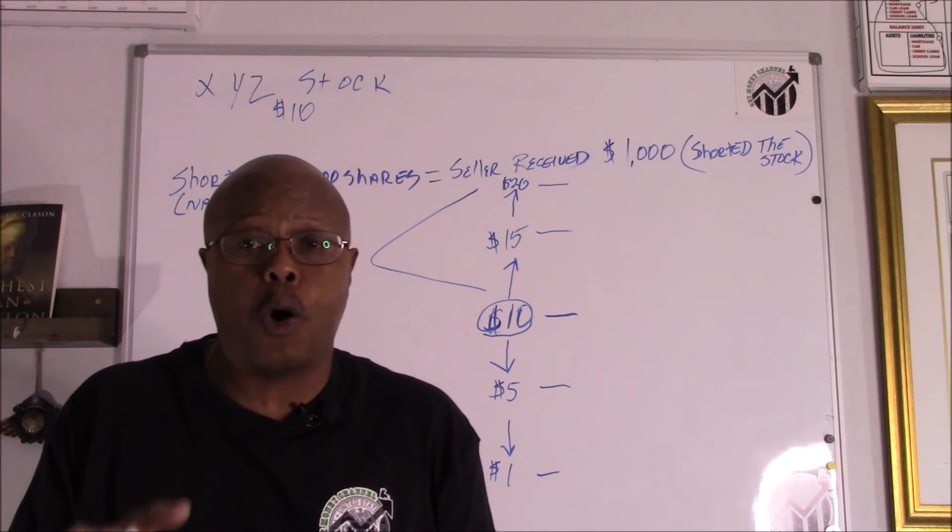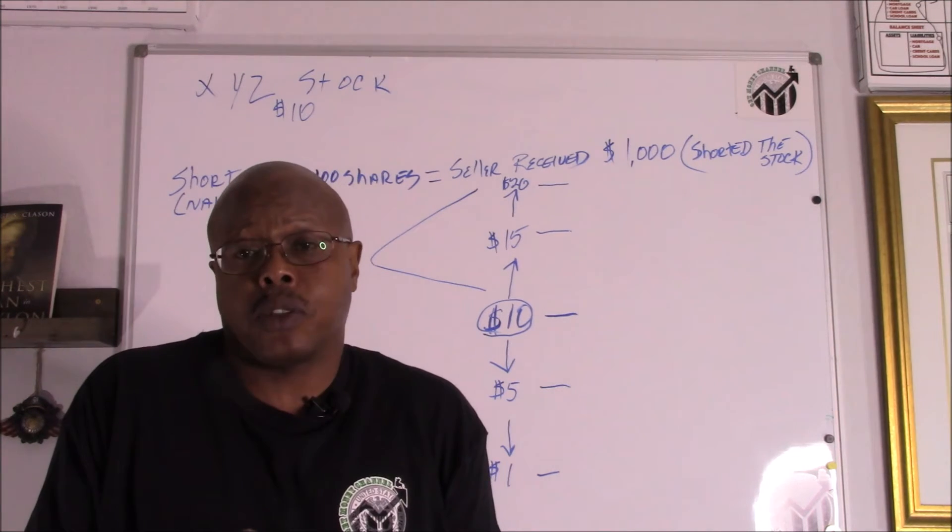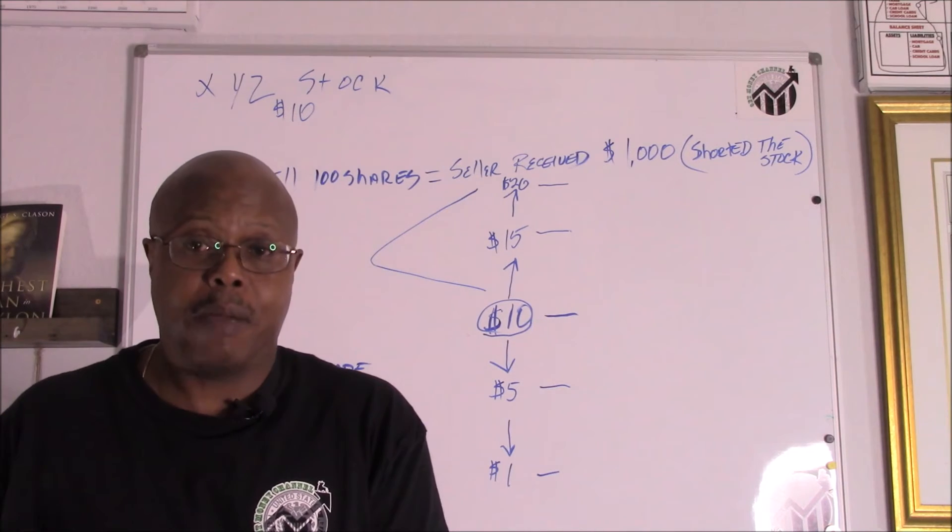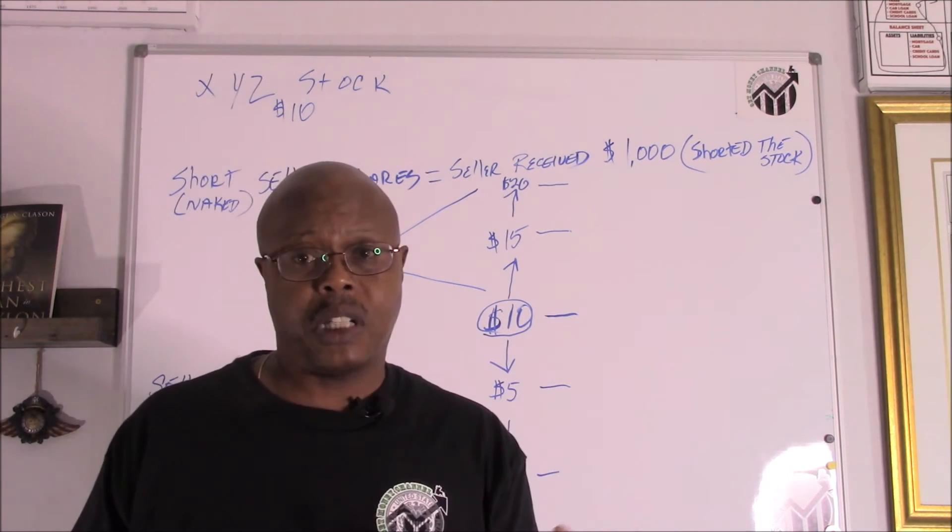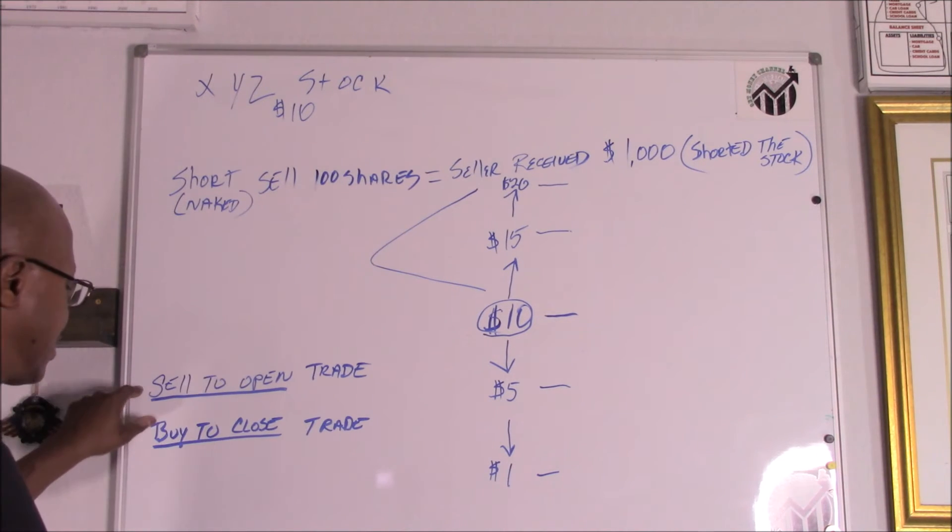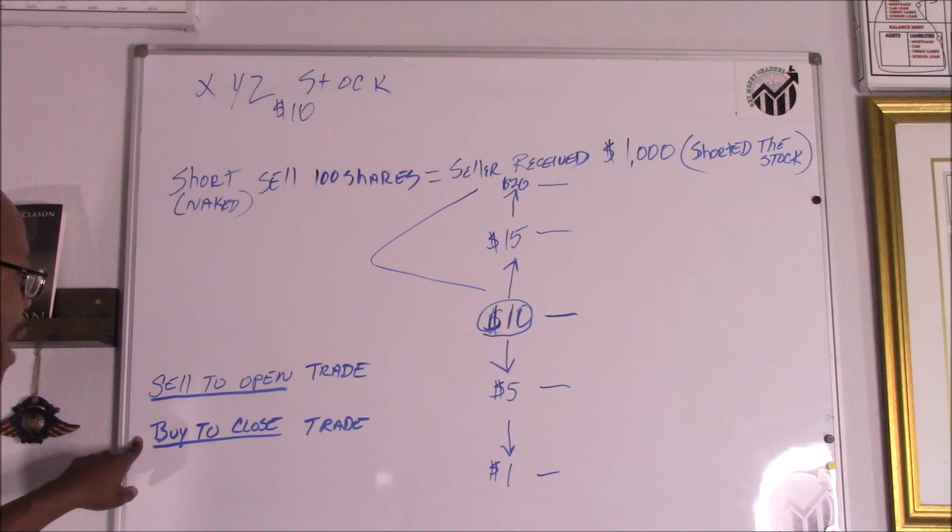In a normal stock transaction you buy the stock in order to open, and then whenever you close it out, whenever you sell it, that's when you close out the trade. It may be years down the line. With the short sell it's different, it's the opposite. You sell something even though you may not have it in order to open a trade, then you got to buy it back to close the trade. Hopefully you're buying it back at a lower price.